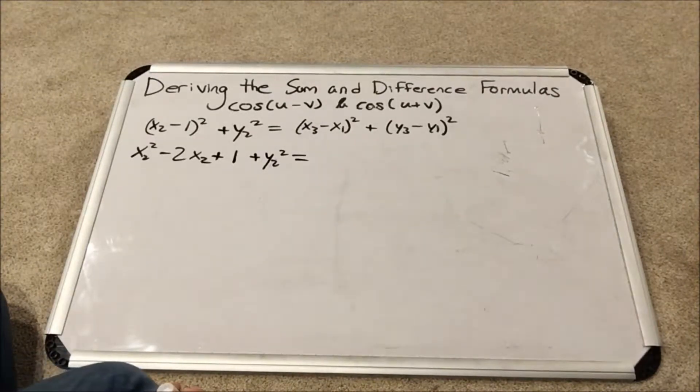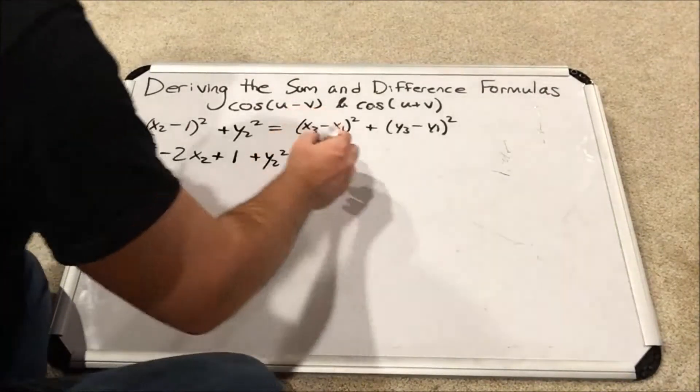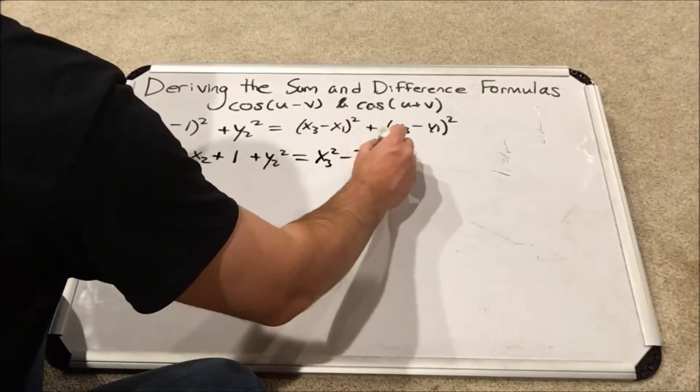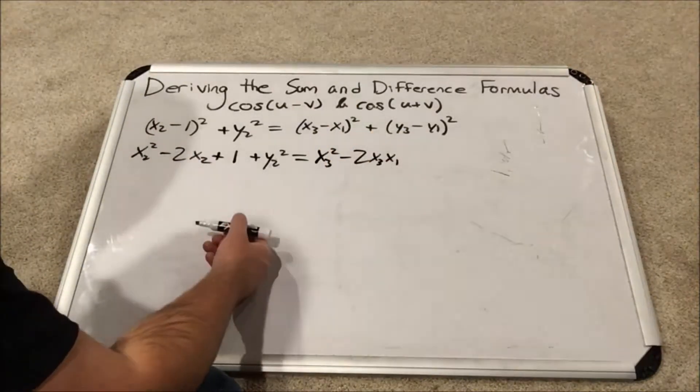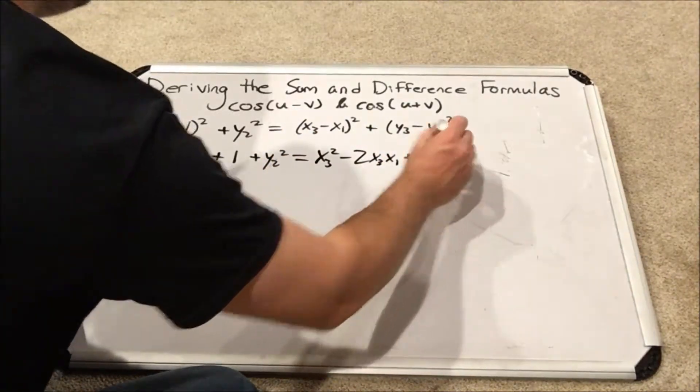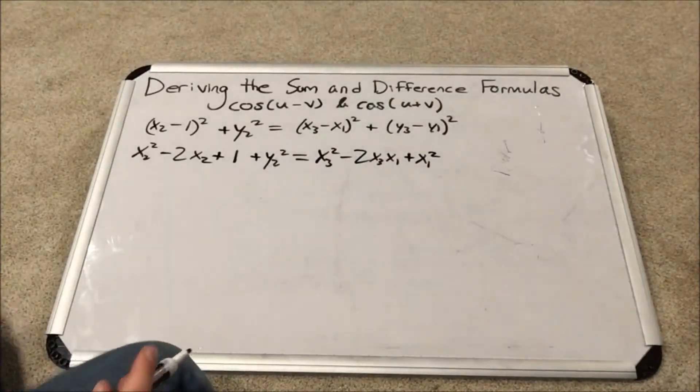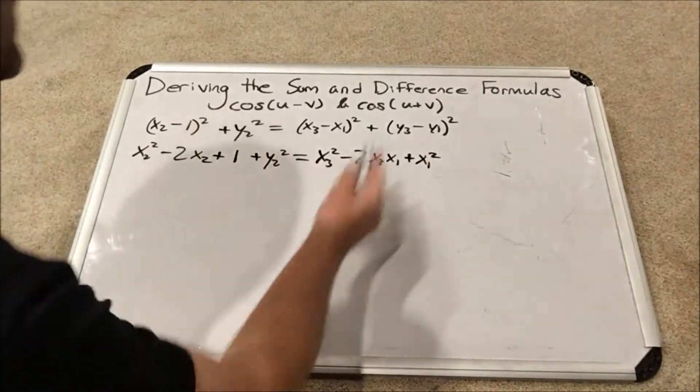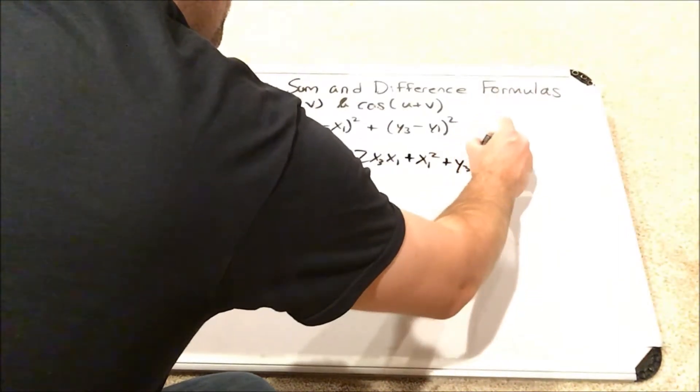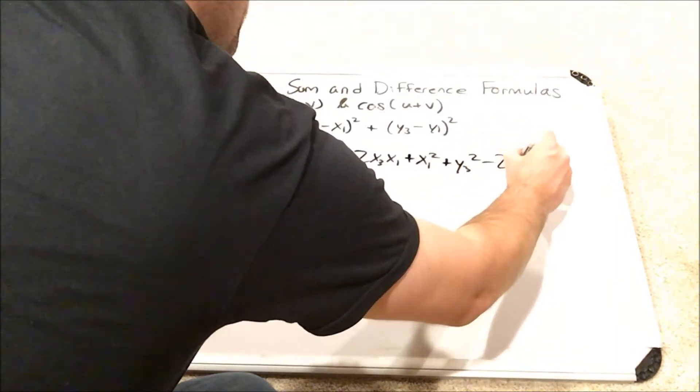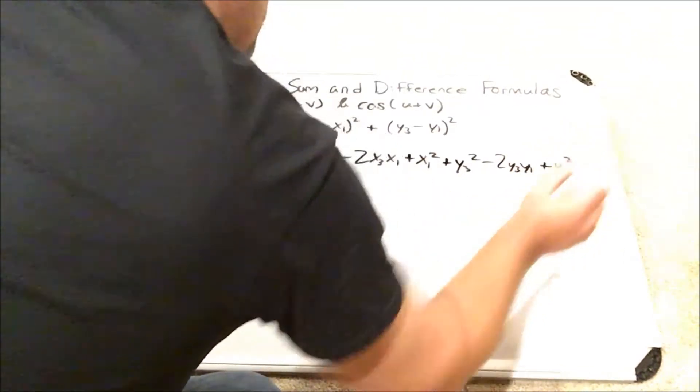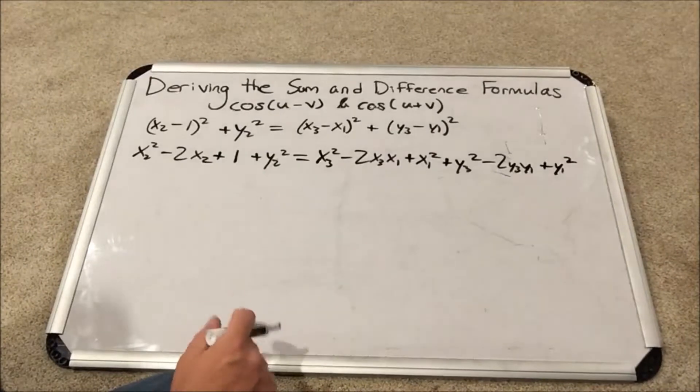Now the other side, two foiling operations must occur. I'm going to have x3 squared minus 2x3x1, plus x1 squared. And I'm going to write the second one which has the same form but with y's instead: y3 squared minus 2y3y1 plus y1 squared.